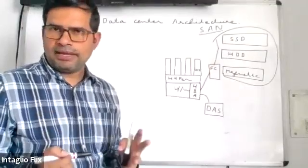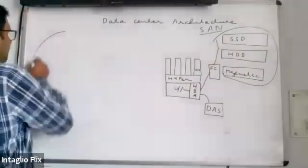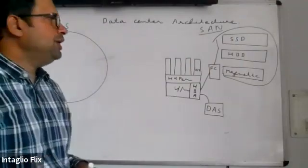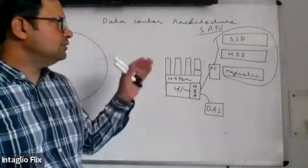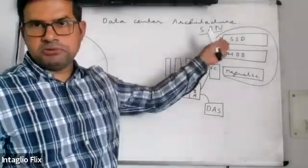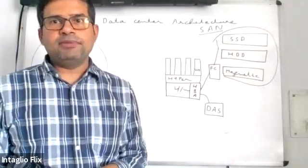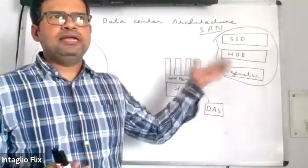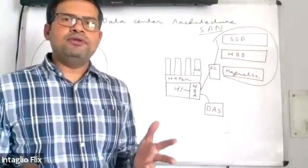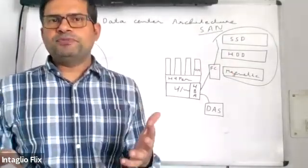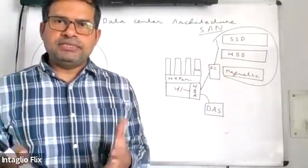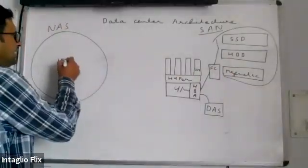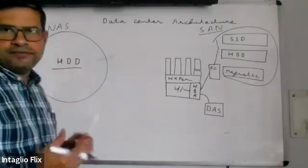The next type of storage is NAS — Network Attached Storage. Virtual machines initially use SAN because it is very fast, but over time data becomes infrequently accessed. At that point, you set up a transition and send this data to NAS.